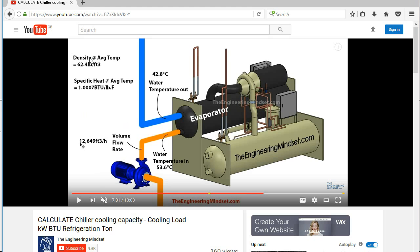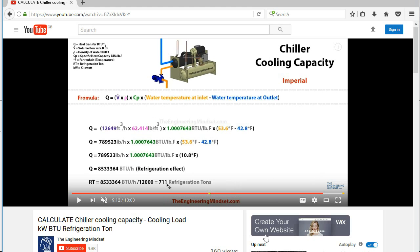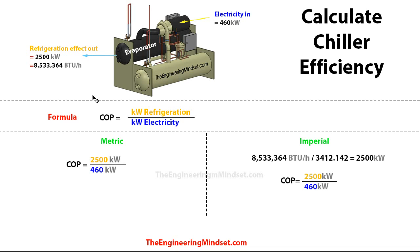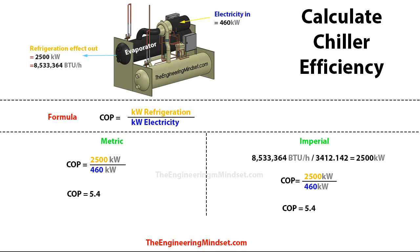I'll also explain what we need and how we get the calculations, and we'll run these through in imperial as well. So for the metric side, it's very easy — we're just going to drop in the number for the refrigeration effect out at the top of the division, and then put the amount of electricity going into the machine at the bottom. On the imperial side, first of all we want to convert from BTUs per hour into kilowatt hours. You just divide your BTUs per hour by 3412.142, and you'll see it comes out exactly the same as 2,500 kilowatts. Then simply do the division and you'll see that the COP comes out at 5.4.